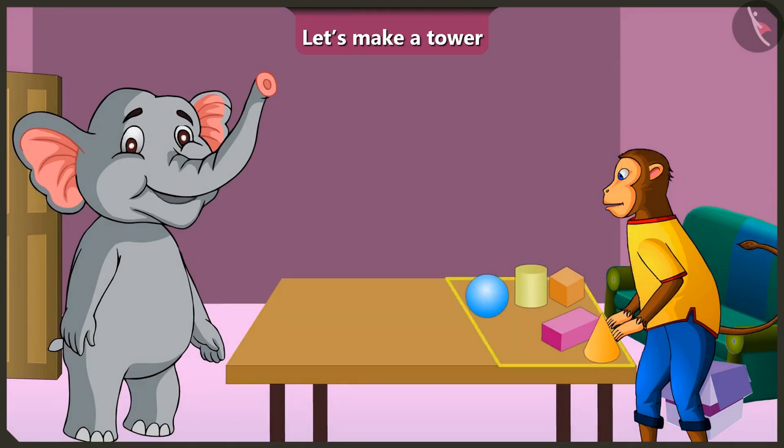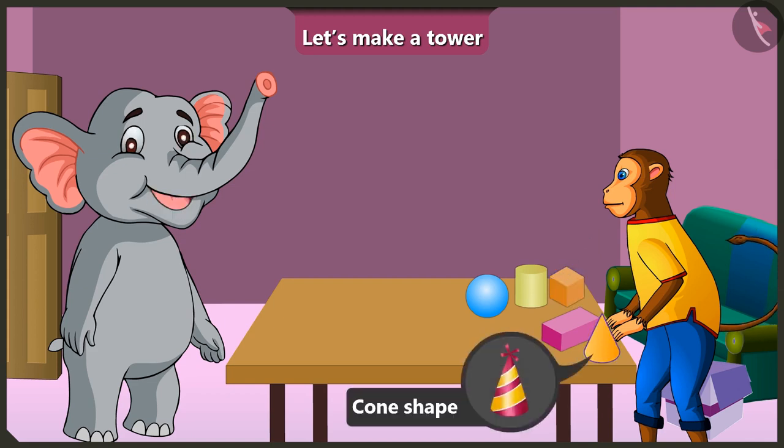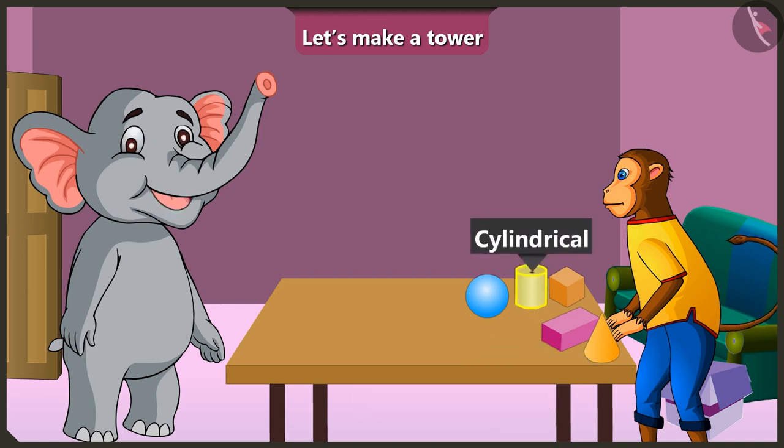Can you name these solid shapes? Yes, this box is actually of a cuboid shape. This looks like a cube. This joker's cap is cone-shaped. This is cylindrical and this is round like a ball. Oh wow Appu, you know everything.